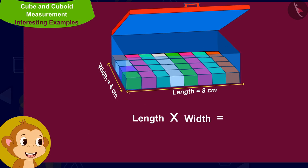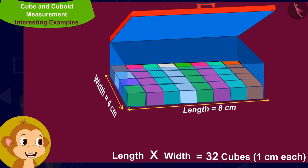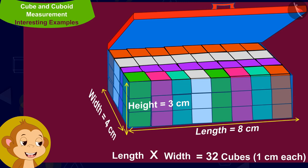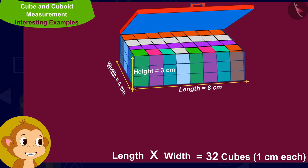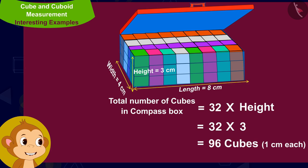That is 8 multiplied by 4, which equals 32 cubes of dimension 1 centimeter each. Now the height of the compass box is 3 centimeters, which means there are 3 such layers of cubes of dimension 1 centimeter each. That means each compass box would have a total of 32 times 3, which is 96 cubes of dimension 1 centimeter each.